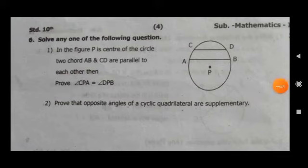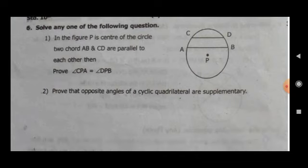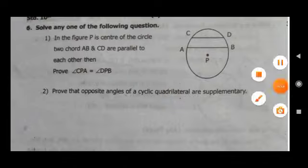Question 6, solve any one of the following. Three marks at 3. First, in the figure, P is center of the circle. Chord AB and chord CD are parallel to each other. Prove that angle CPB is equal to angle DPB. Second, prove that opposite angles of a cyclic quadrilateral are supplementary.